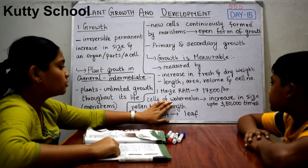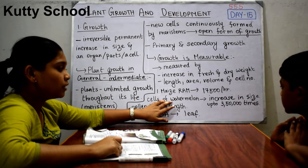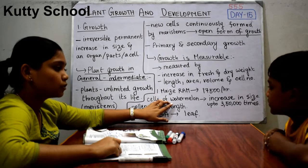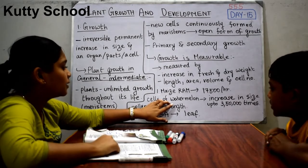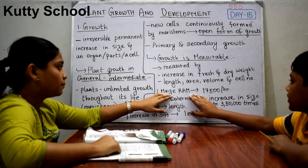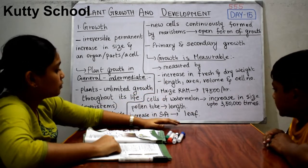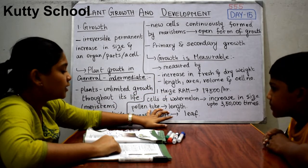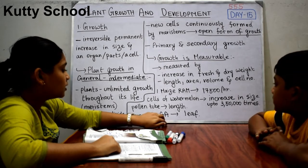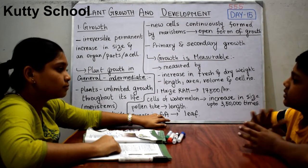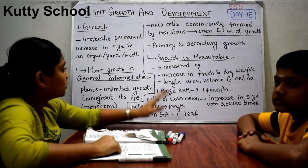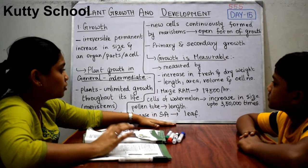Cells of watermelon can increase in size up to 350,000 times, which is measured as increase in fresh weight since watermelons have lots of water content. This is increase in cell size. If you take a root or shoot, growth is measured in length. If you take a leaf, it is measured in surface area. Each measurement varies with different parts of the plant.